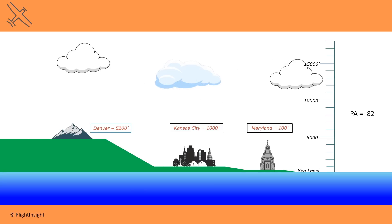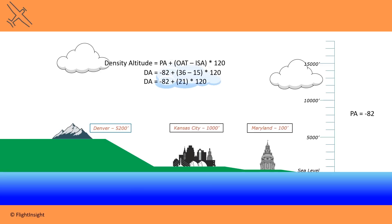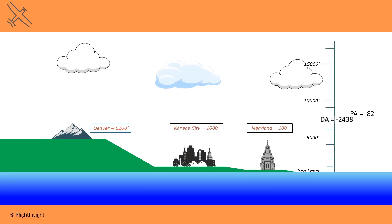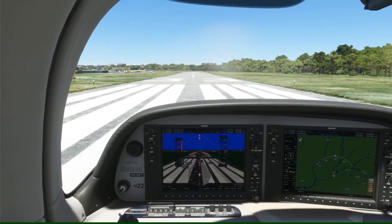Now we need to get to density altitude by applying temperature. Our outside air temperature, which we can read off our PFD, is 36 degrees Celsius, or 97 Fahrenheit. We subtract from this the standard conditions temperature — at sea level, the standard temp is 15 degrees Celsius, and we're close to sea level here so we can use that figure. The difference between the two temperatures is 21 degrees. We multiply that by 120 and add it to our pressure altitude to get 2,438 feet. This is our density altitude, telling us the aircraft will behave today as if it were placed at around 2,500 feet in standard conditions.